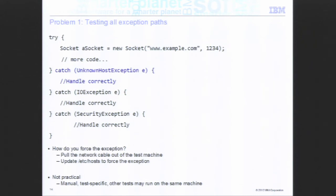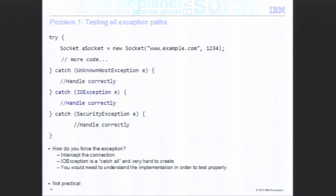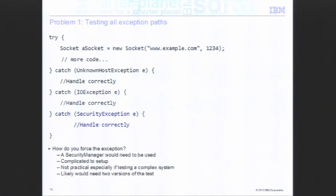As soon as you change your test machine, any other test running on it can't really be trusted. With BCI, we can test for unknown host exceptions. For IOException, you would need to understand the implementation in order to test for it, and it's actually going to be really hard — how would you intercept the connection to cause an IOException? The SecurityException is interesting because you have to create a security manager to test that particular exception, and it could be complicated to set up.